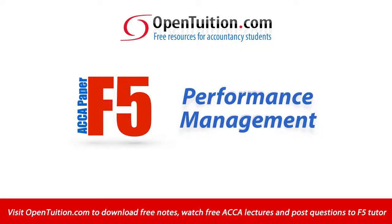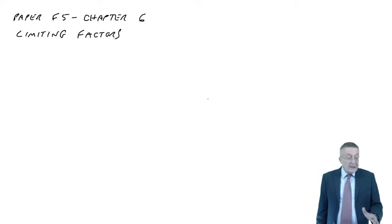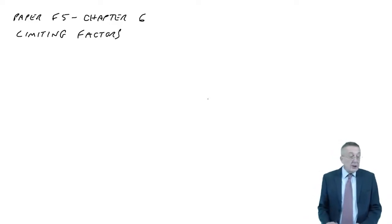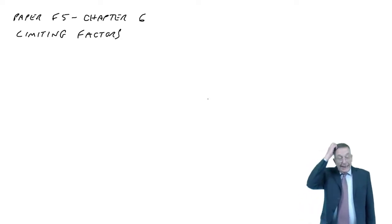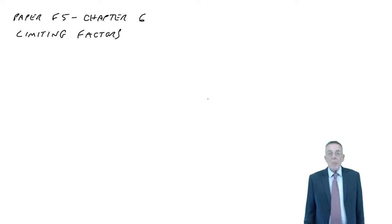This is a lecture from Open Tuition. To benefit from the lecture, you should download the free lecture notes from opentuition.com. This lecture is on chapter 6 of the paper F5 lecture notes, and as you can see, it's called Limiting Factors. And it does look as though it's a terribly short chapter, only two pages. But as you'll see, there is quite a lot involved, and so I will split this into several lectures.